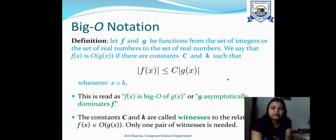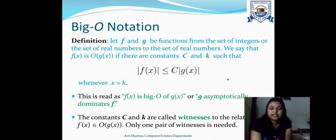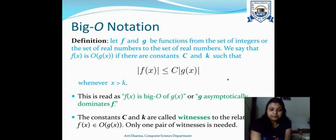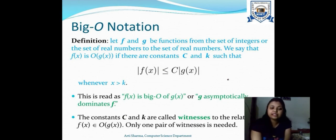The first notation is Big O notation. Given two functions f and g from the set of integers or real numbers, we say f(x) = O(g(x)) if there exist two constants c and k such that |f(x)| ≤ c·|g(x)| whenever x > k. We say g asymptotically dominates f. The constants c and k are called the witnesses of the relationship f(x) = O(g(x)).